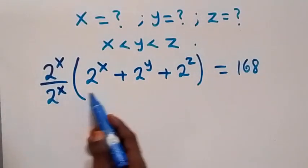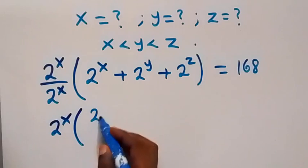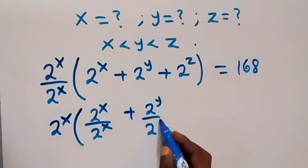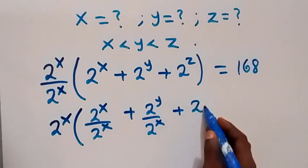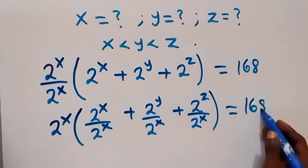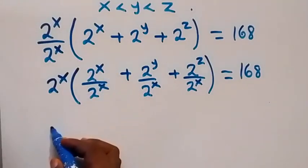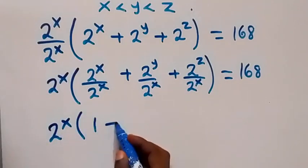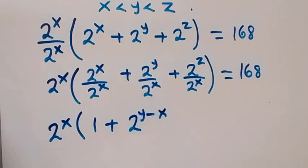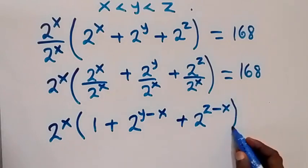Now let's take 2 raised to power x outside as a factor. We have 2 raised to power x into bracket: 2 raised to power x over 2 raised to power x, plus 2 raised to power y over 2 raised to power x, plus 2 raised to power z over 2 raised to power x, close bracket equals 168. Simplifying gives 2 raised to power x times bracket 1 plus 2 raised to power (y minus x) plus 2 raised to power (z minus x) close bracket equals 168.